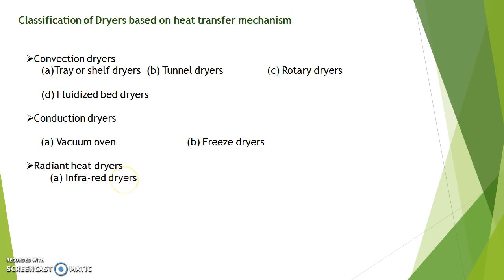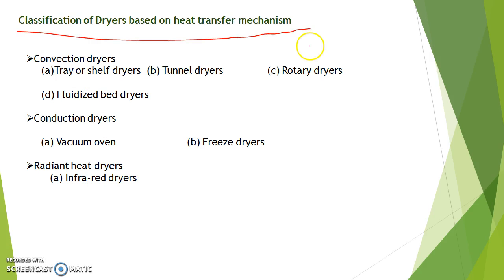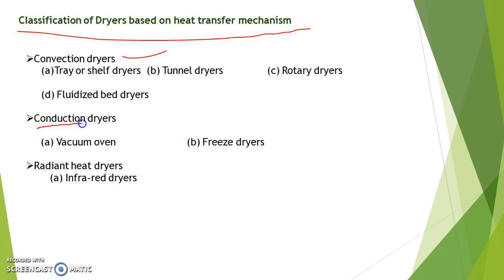Today's topic of discussion is classification of dryers based on the heat transfer mechanism. Based on heat transfer mechanism, dryers are classified into three categories: convection dryers, conduction dryers, and radiant heat dryers.